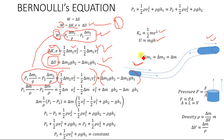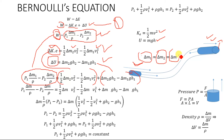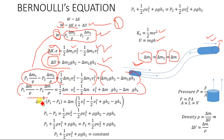Since the fluid is incompressible, the mass flowing into the first end of the pipe equals the mass flowing out of the second end: Δm1 equals Δm2, which we denote as Δm. Substituting this, Δm appears in every term and can be factored out and cancelled from both sides of the equation.